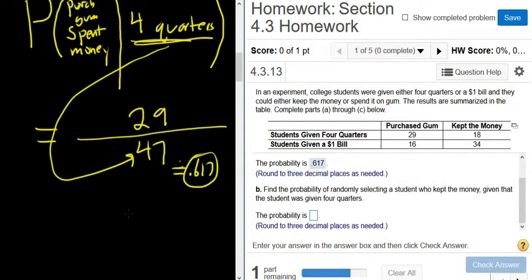Let's do the next part. Find the probability of selecting a student who kept the money given that the student was given four quarters. Okay, let's write it down. So P, so kept the money, so kept. And then it says given that, so you write the line. Always go in order, right? It's the best way to do it. And then given four quarters, so four quarters.